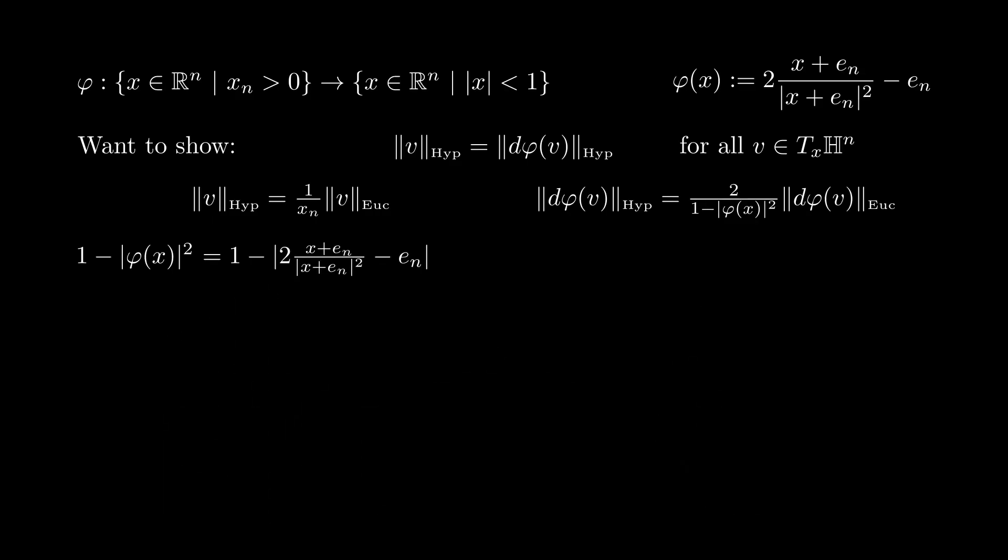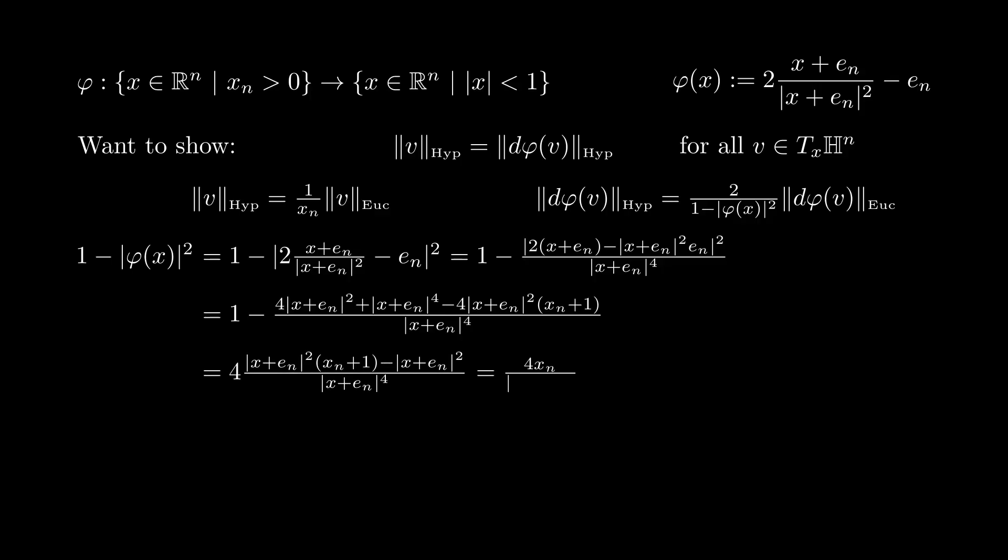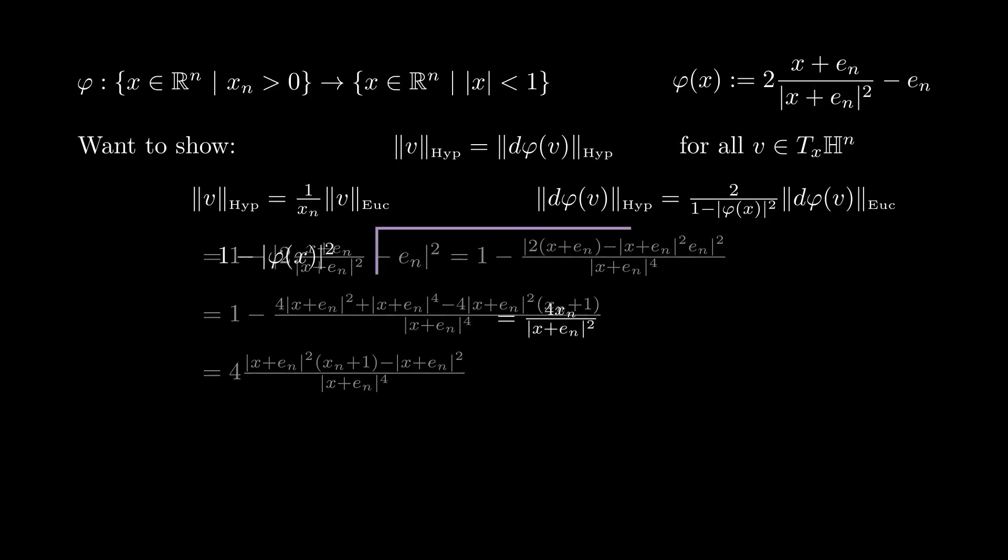The first thing we do is to put a common denominator inside the norm. Then we expand the norm squared in the numerator using the trinomial formula. And then we put a common denominator on the whole expression, which simplifies to 4x_n over the norm of x plus e_n squared.